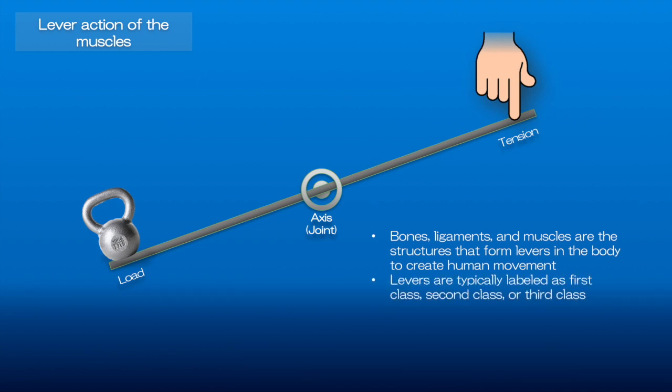Levers are typically labeled as first class, second class, or third class, and all three types are found in the body, but most levers in the human body are third class.